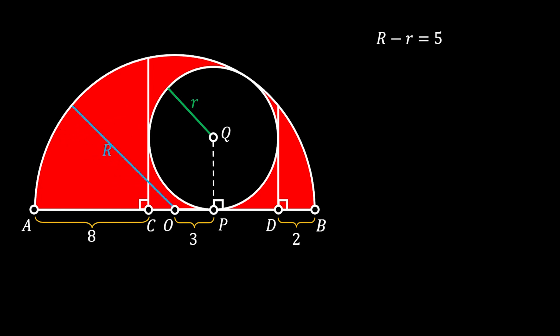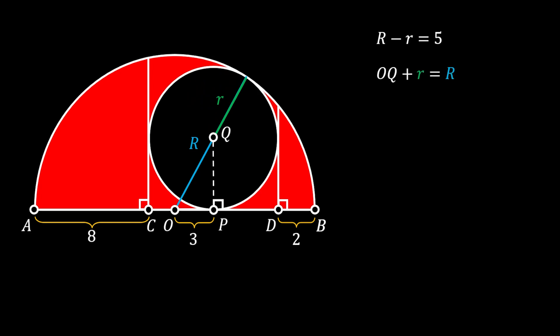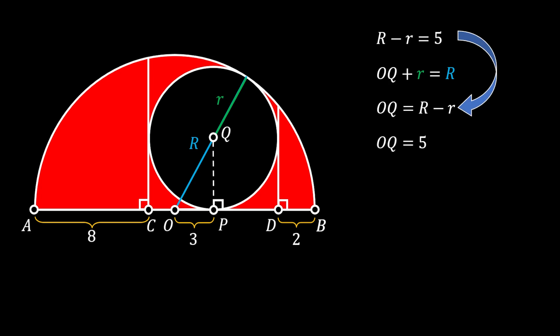Now we rotate the radius of the bigger half circle to point Q and align the radius of the smaller circle. The line OQ plus the radius of the smaller circle equals the radius of the bigger circle. Rewriting: OQ = R − r, and substituting our known difference gives OQ = 5.